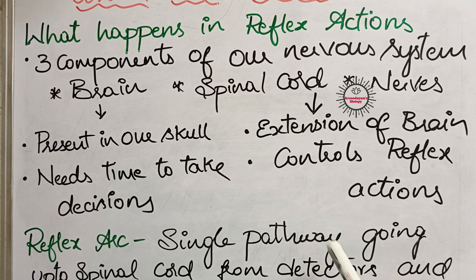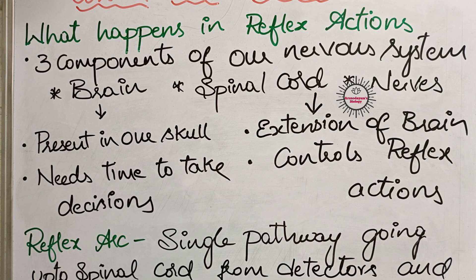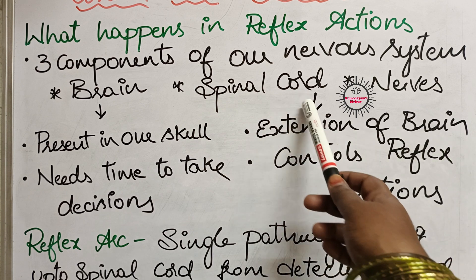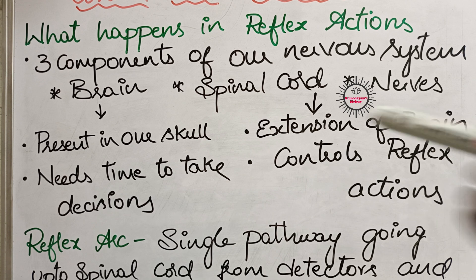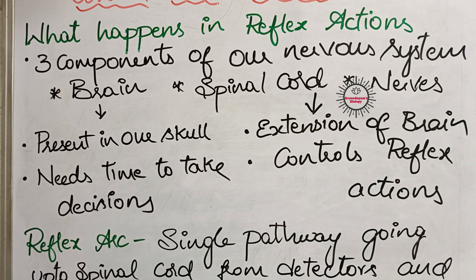The spinal cord is the extension of the brain. It is a long trunk-like structure present in our vertebral column. Exclusively, it controls reflex actions — providing immediate responses in dangerous situations. The information is sent to the spinal cord, which gives responses within a fraction of seconds and saves us from danger.